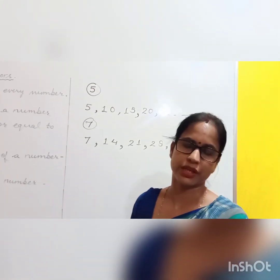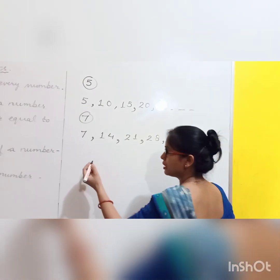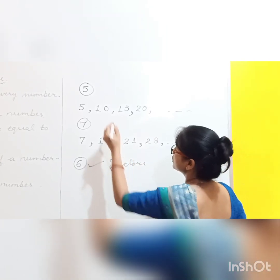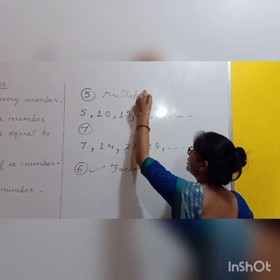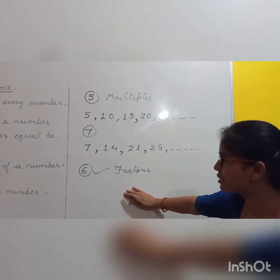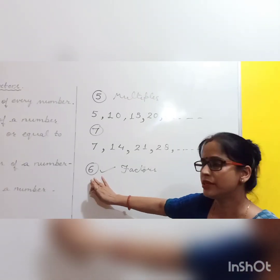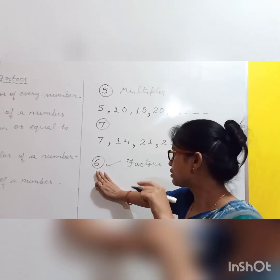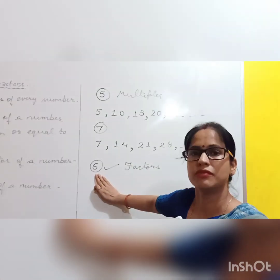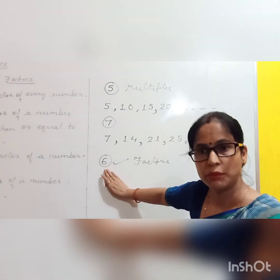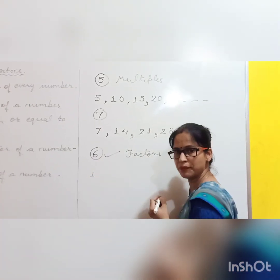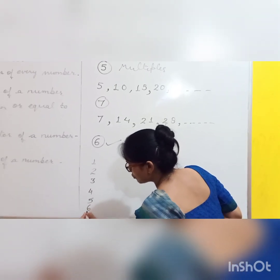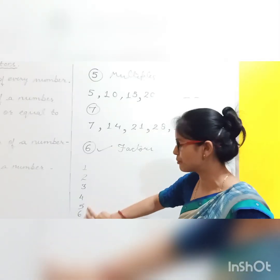Now, how to find the factors of a given number? Let's take the example of 6 — we have to find its factors. To get the factors of 6, we have to check the divisibility of 6 by smaller numbers than 6. So we will write these smaller numbers: 1, 2, 3, 4, 5, and we will also check with 6.